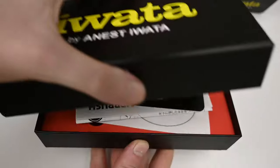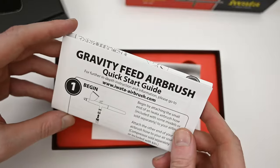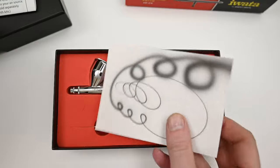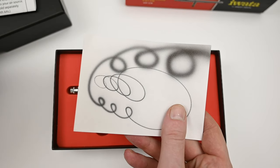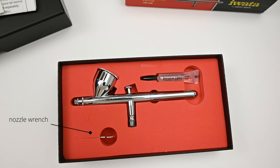In the box, you get an Iwata sticker, some very basic documentation like this quick start guide, and a sheet of paper that has the spray pattern of your airbrush which they tested at the factory. Besides the airbrush, you get a very small wrench to remove the nozzle and a small bottle of Iwata lube.